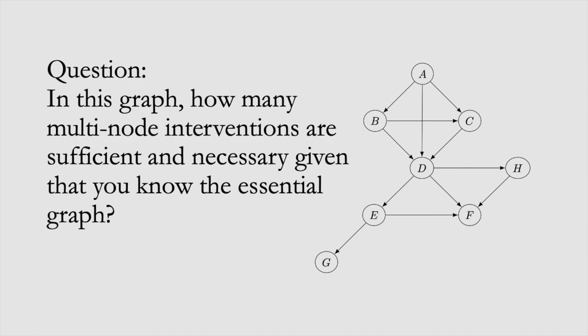That brings us to the end of the multi-node intervention section, and to this question about the graph on the right. In this graph, how many multi-node interventions are sufficient and necessary, given that you know the essential graph?